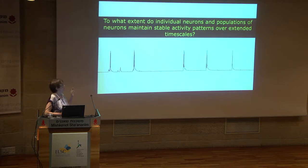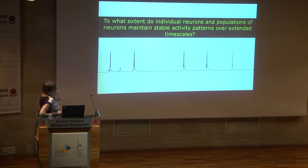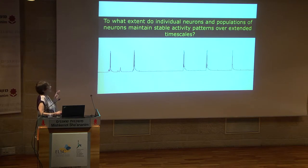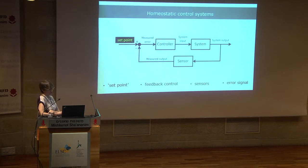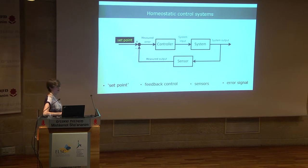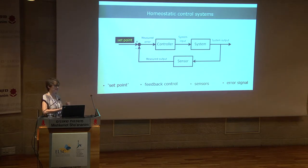Today I will try to address a very simple question that we asked several years ago: to what extent do individual neurons and populations of neurons maintain stable activity patterns over extended time scales? When we talk about stability of any circuitry, we can think about a homeostatic control system that the circuitry must have.